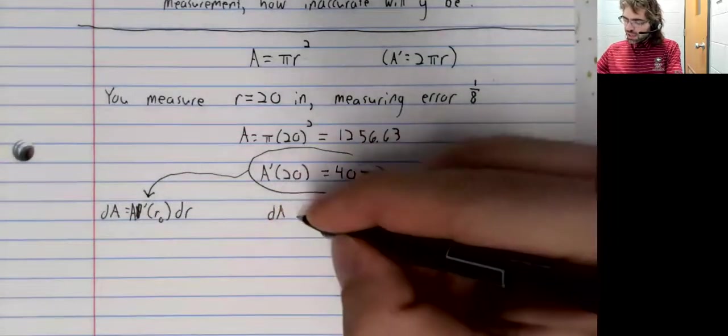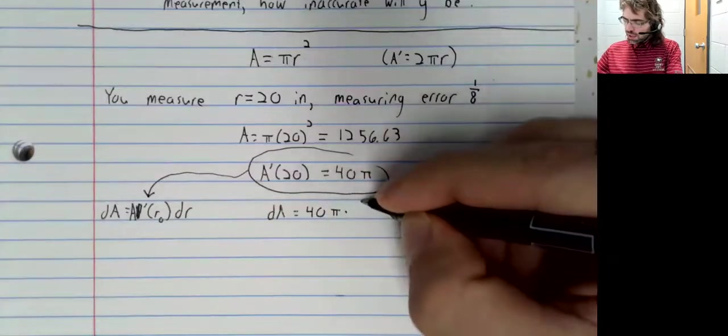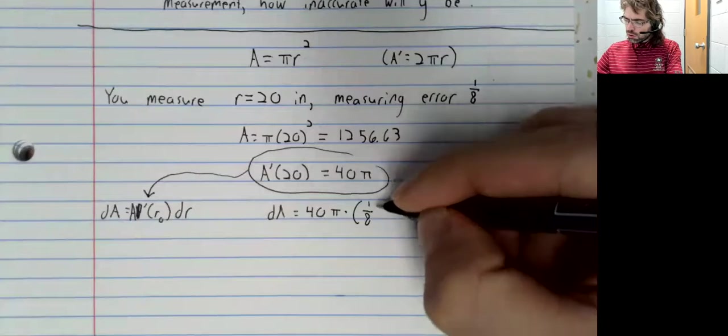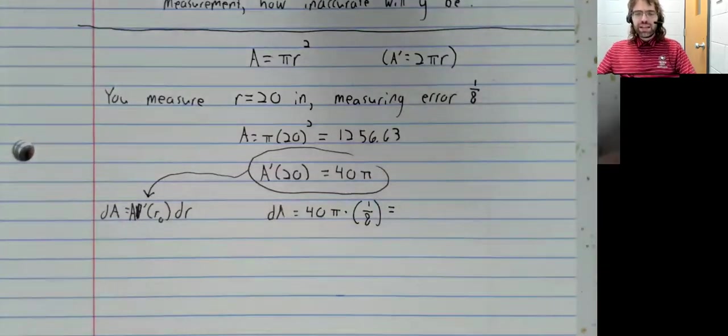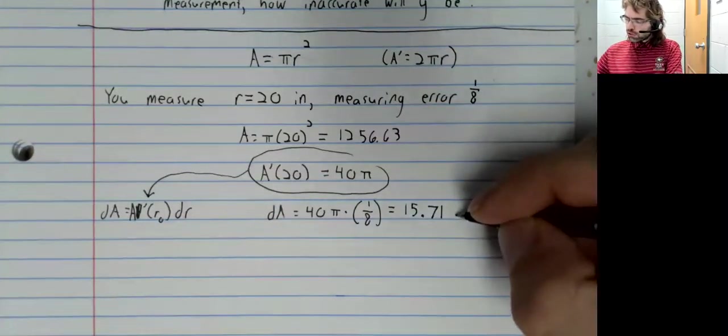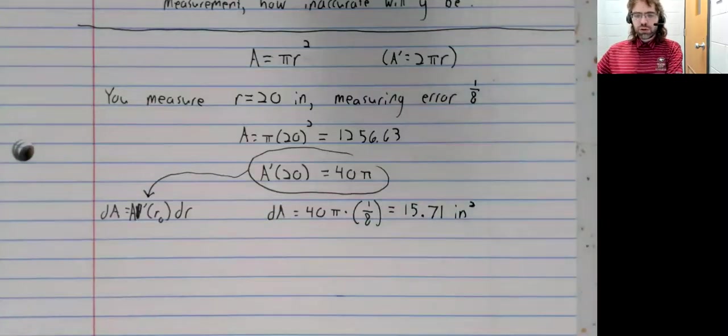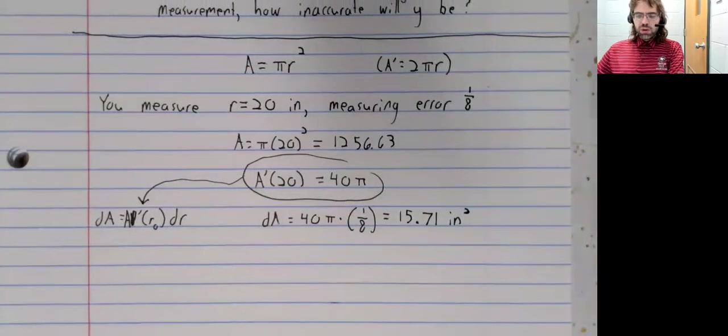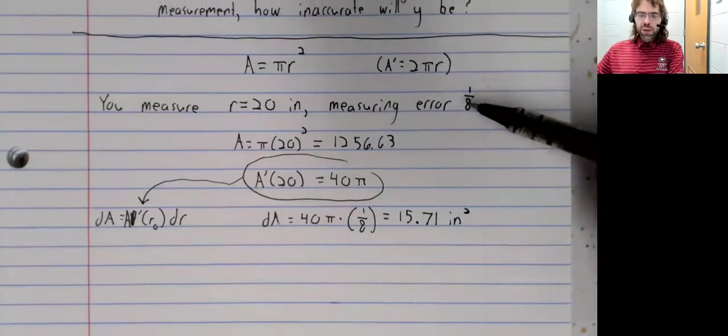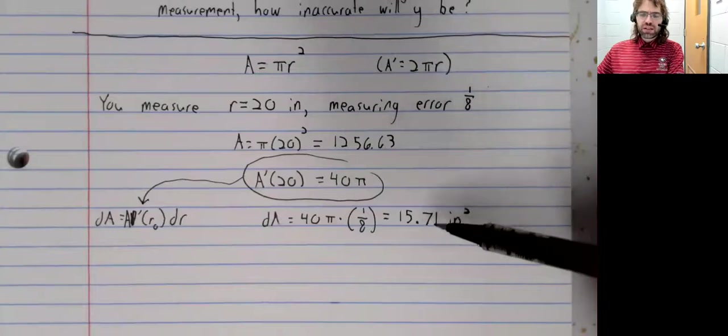dA equals 40π times our measurement error of 1/8 of an inch, which gives us an approximate error of 15.71 square inches. So if our radius isn't off by more than 1/8 of an inch, this area shouldn't be off by more than this.